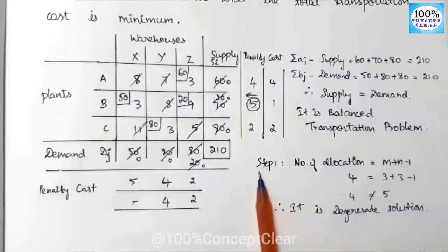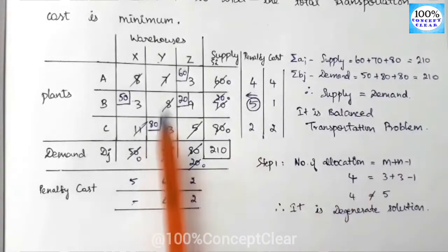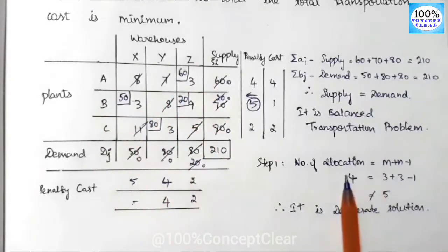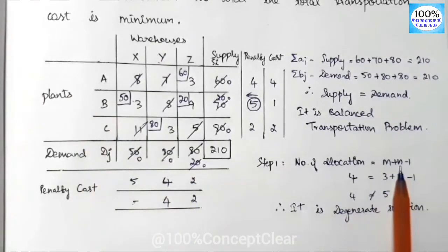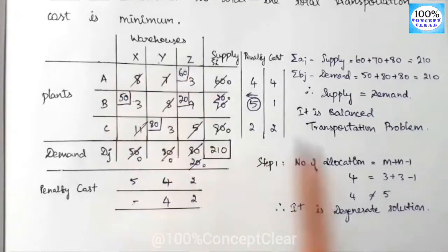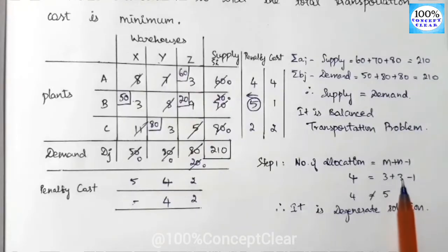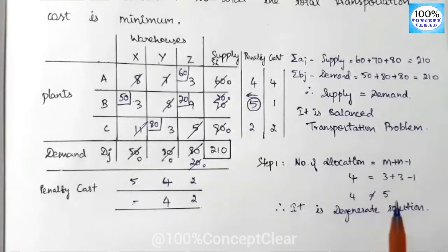Step 1 is to check the number of allocations. We count: 1, 2, 3, 4 — there are 4 allocations. For a non-degenerate solution, we need m plus n minus 1 allocations. Here m equals 3 rows and n equals 3 columns, so 3 plus 3 minus 1 equals 5. Since allocations are 4 but m+n-1 is 5, they are not equal — this is a degenerate solution.